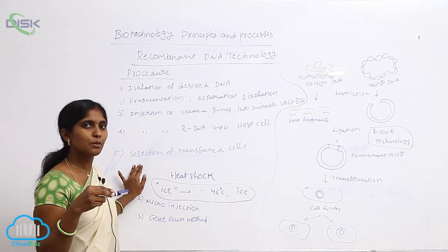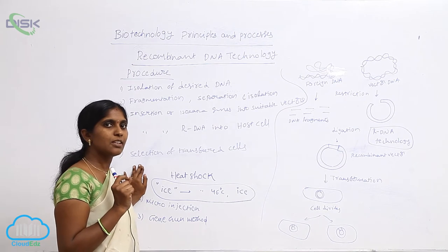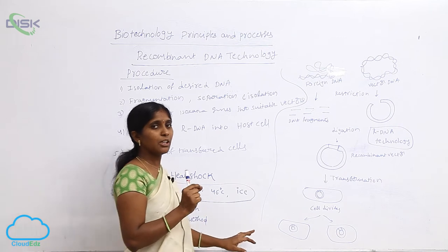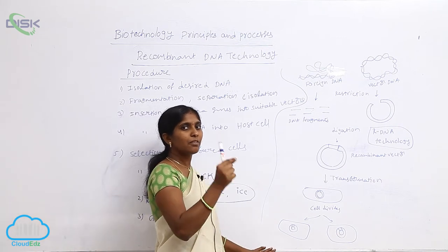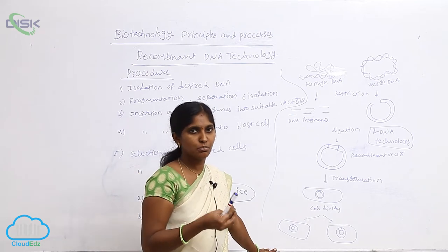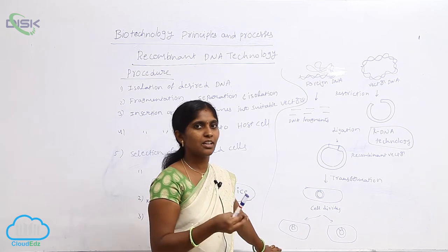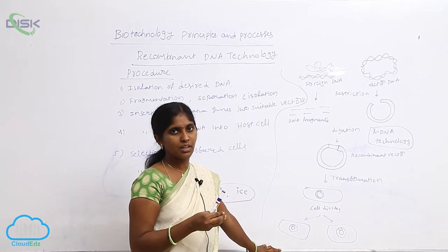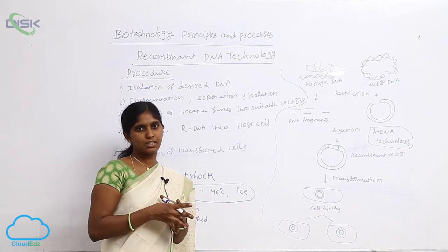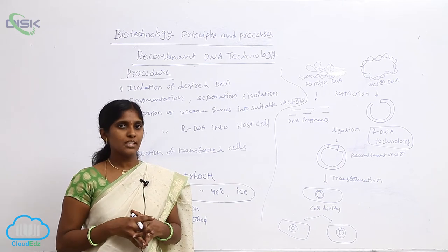You take the bacterial culture medium. In that bacterial culture medium, there is a presence of antibiotic. In that particular antibiotic medium, the bacteria that survive show many colonies — healthy colonies — meaning the foreign DNA is inserted correctly. If the colonies are not formed in the presence of the antibiotic culture, there is no insertion. That is how we go for the selection.